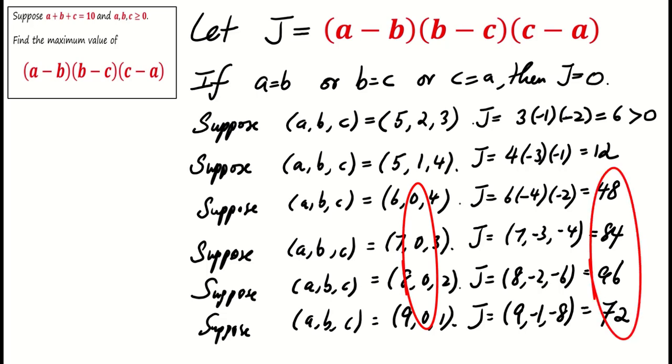So far, the highest value of J we found with various a, b, c combinations is 96. Is 96 the absolute maximum for J?